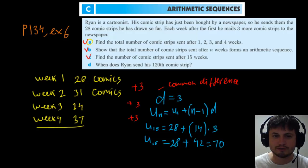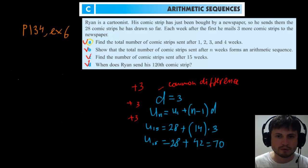And the last question is, this is a little bit more tricky, but it's basically you have to work backwards. When does Ryan send his 120th comic strip? So here we know the u_n, but we just don't know the n, so we're looking for n. And so the way we find this is by basically plugging in the numbers backwards.